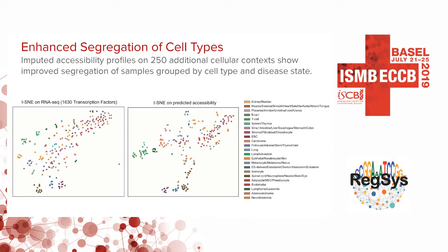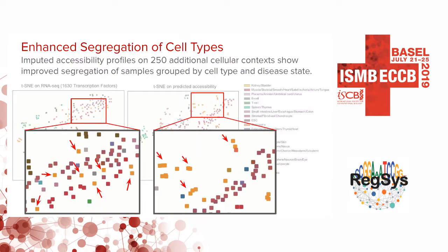Finally, we impute accessibility profiles for 250 additional cellular contexts for which we had RNA-seq but not DNase-seq data. Clustering based on predicted accessibility is generally cleaner and more biologically meaningful than clustering based on transcription factors alone. A notable example is a small cluster of adenocarcinomas, which are much more clearly separated in predicted accessibility than by transcription factors — especially interesting since adenocarcinomas were not present in the 123 training cell types.